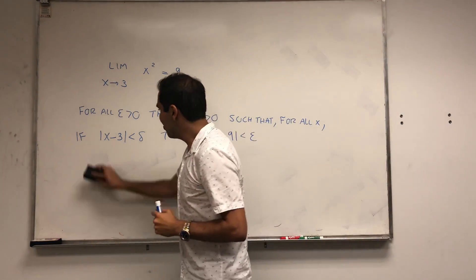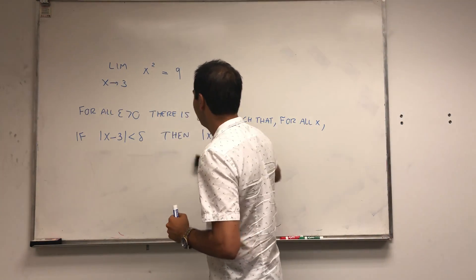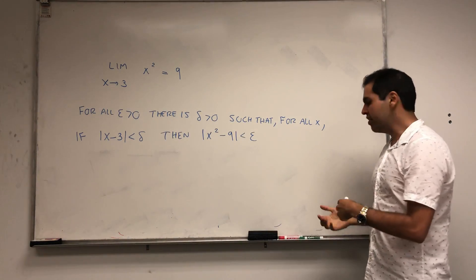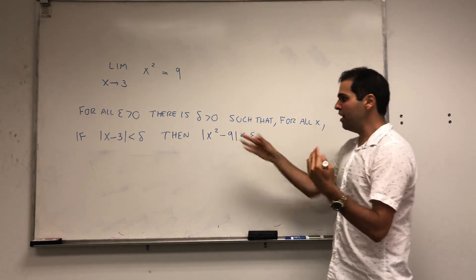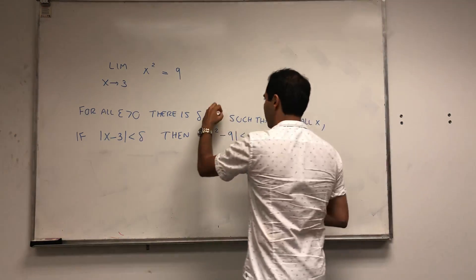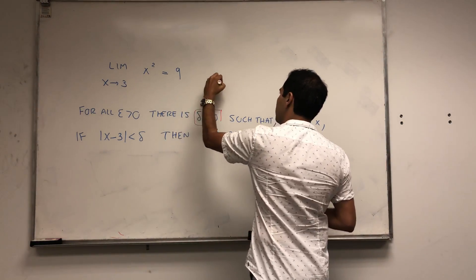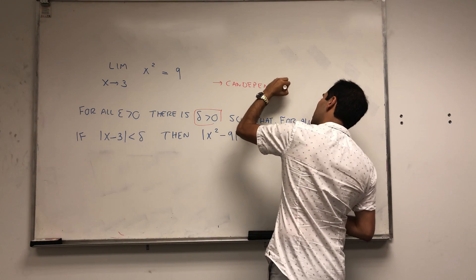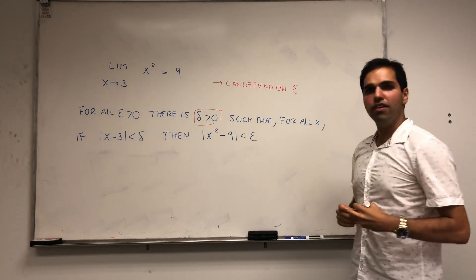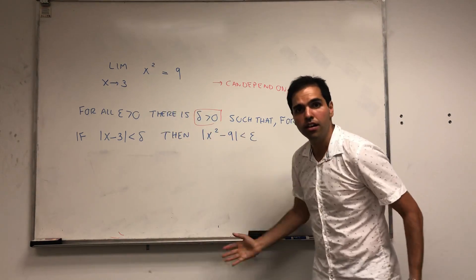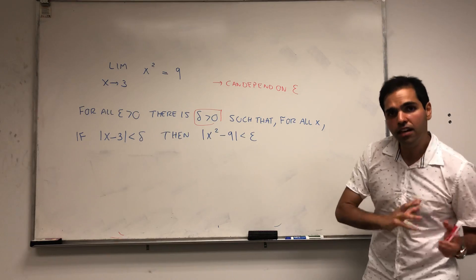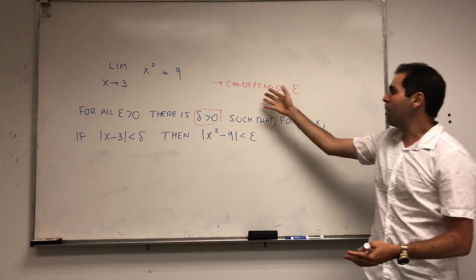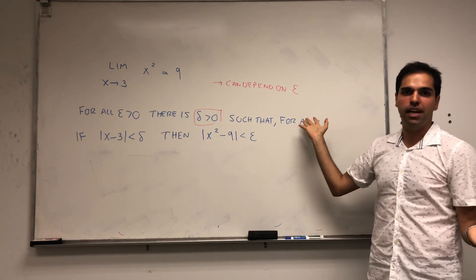Here comes an important remark for today. When we say for all epsilon there is a delta, it means that delta could depend on epsilon. Think of like your friend throwing you a ball. Your friend is epsilon, it throws you a ball, and you're delta, you're responding, and your response is totally okay to depend on epsilon.